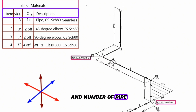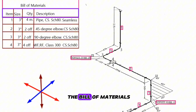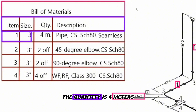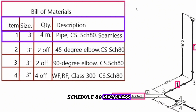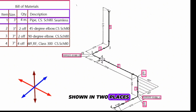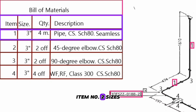Now let's learn the names and numbers of pipe fittings used in the pipeline. Item number 1 is shown in several places on the pipe drawings. Let's look at the bill of materials.